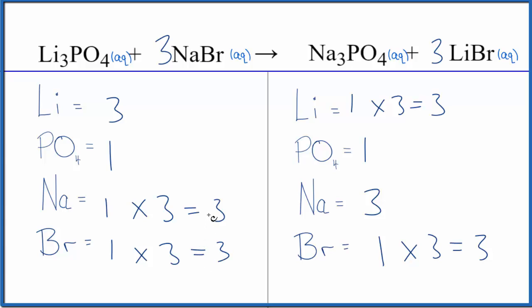This is the balanced equation for Li3PO4 plus NaBr. The type of reaction is a double displacement reaction, but because everything is aqueous, there's really no reaction taking place.